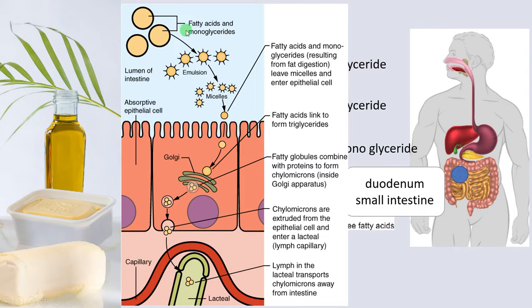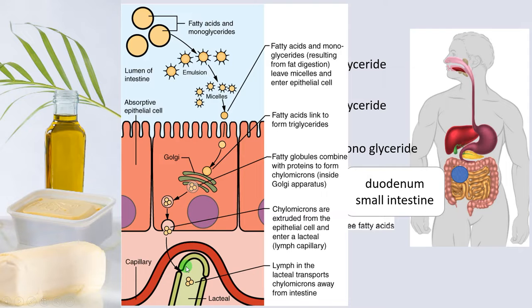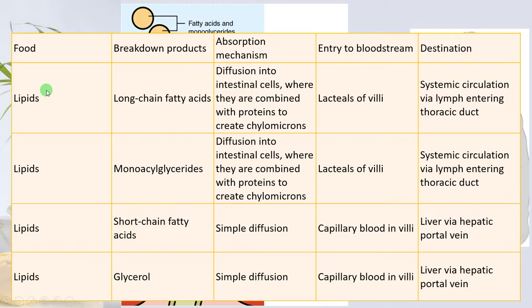Regarding the transport and absorption of lipids: fatty acids and monoglycerides are released, then form a micelle or emulsion. The lipids leave the micelle and enter the epithelial cell. Fatty acids are re-linked to triglycerides, then bind with protein, finally forming chylomicrons in the Golgi apparatus. Chylomicrons are released from the epithelial cell by exocytosis and enter the lymph capillary, which transports the chylomicrons away from the intestine into the bloodstream.